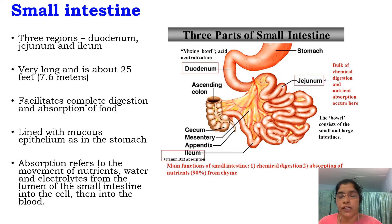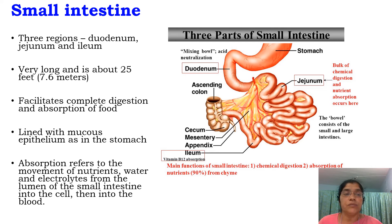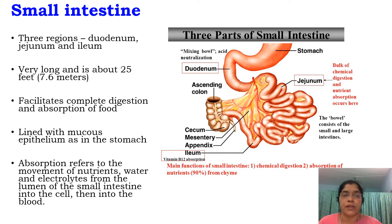The small intestine has three regions: duodenum, jejunum and ileum. The length of the small intestine is about 7.6 meters, or approximately 25 feet. The small intestine facilitates the complete digestion and absorption of food.